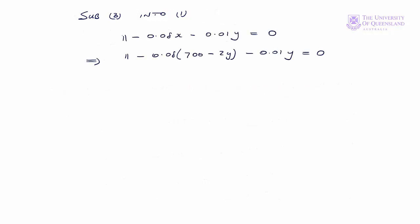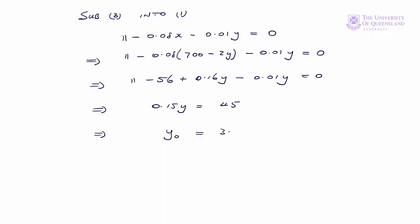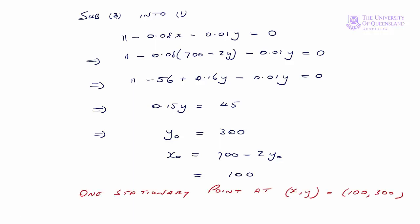We'll substitute equation 3 into equation 1 to get an equation in y that we can solve. Simplifying and dividing through, we get y₀ = 300. Then x₀ = 700 − 2 × 300 = 100. So we find one stationary point at x = 100, y = 300. We might assume this is a maximum, but in order to prove it, we need to consider the second order conditions.